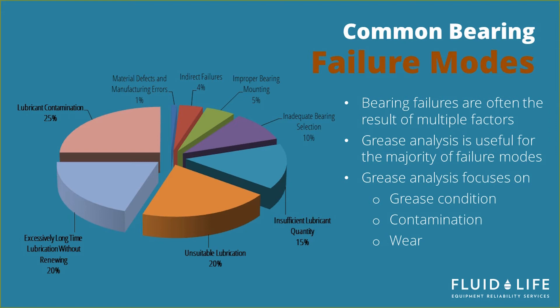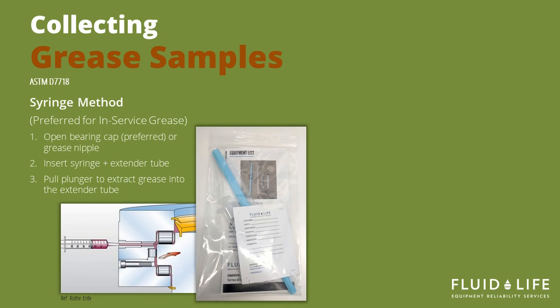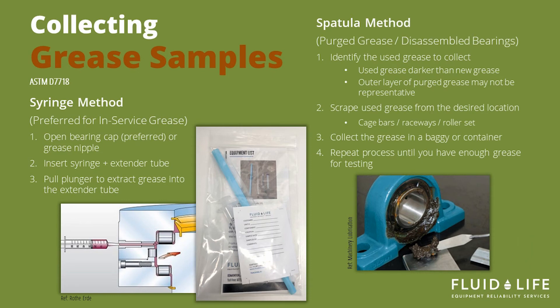In terms of collecting grease samples, there are two methods. The preferred method is the syringe method, which is an ASTM standard. You open the bearing cap or a grease nipple, insert a syringe with an extender tube, and pull the plunger so the grease is extracted into the extender tube — that's what you send off to the laboratory. The second method is to collect grease that has been purged out, typically after new grease has been added, collecting it in a bag with a spatula.